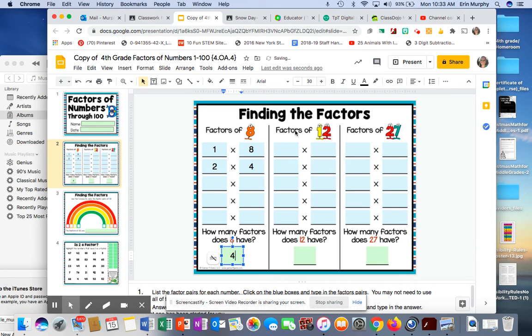Okay? You'll do the same thing for 12. Remember, don't repeat numbers when you're doing multiplication facts. And you'll do the same thing for 27. Tell me how many factors they have.